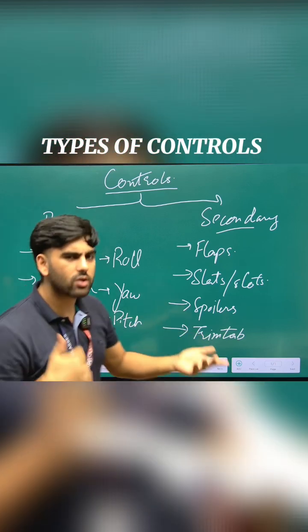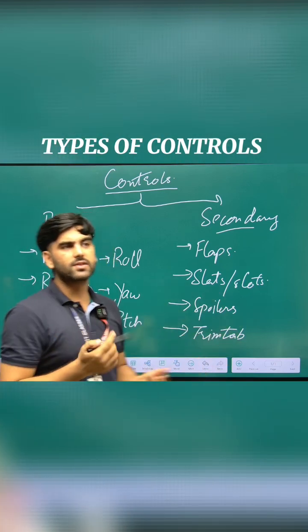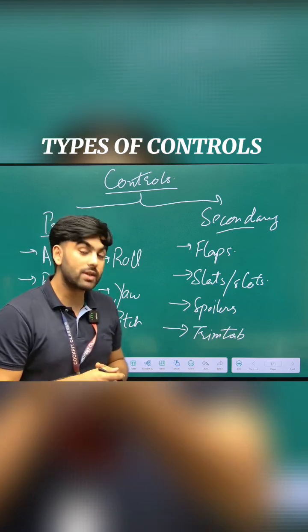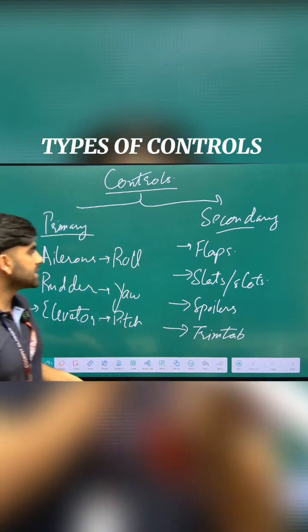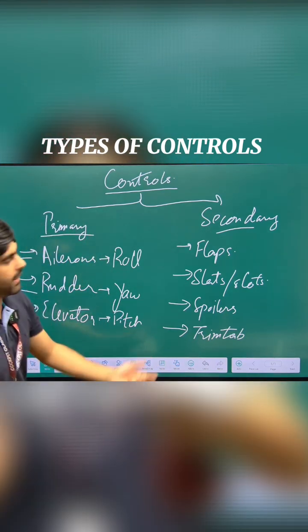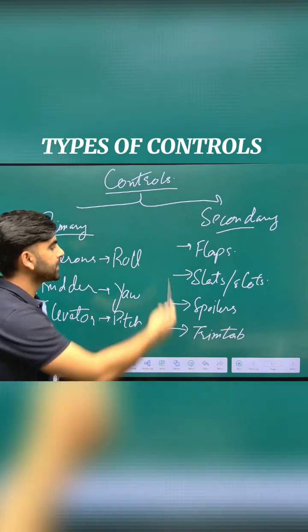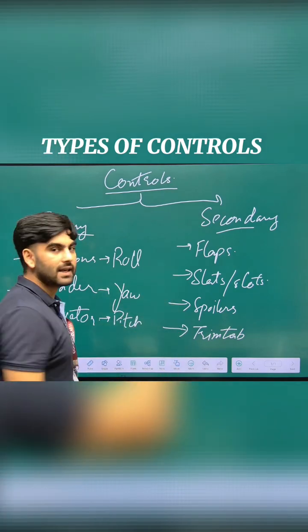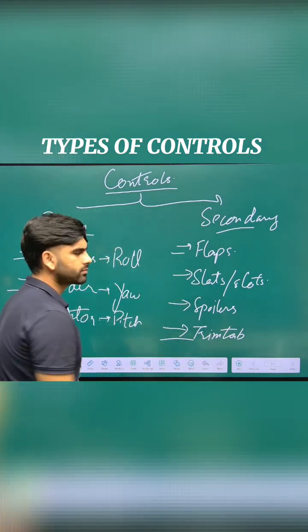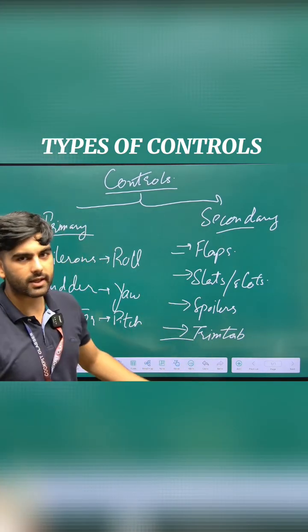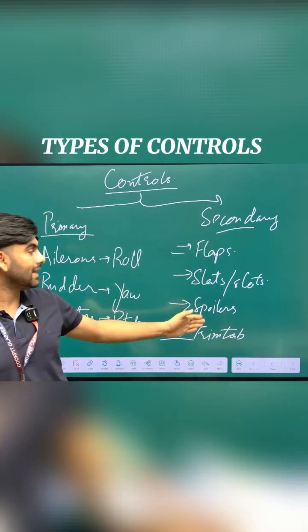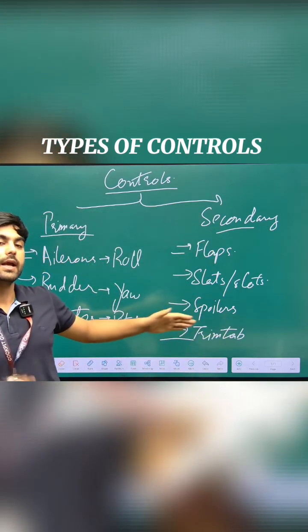If I talk about a particular aircraft, the Cessna 172 will have the three primary controls. Out of the secondary controls, it has flaps and trim tabs — that's it.